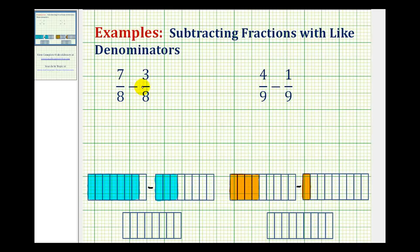So for 7 eighths minus 3 eighths, the denominator is going to stay 8. And then for the numerator we would have 7 minus 3, which is equal to 4.